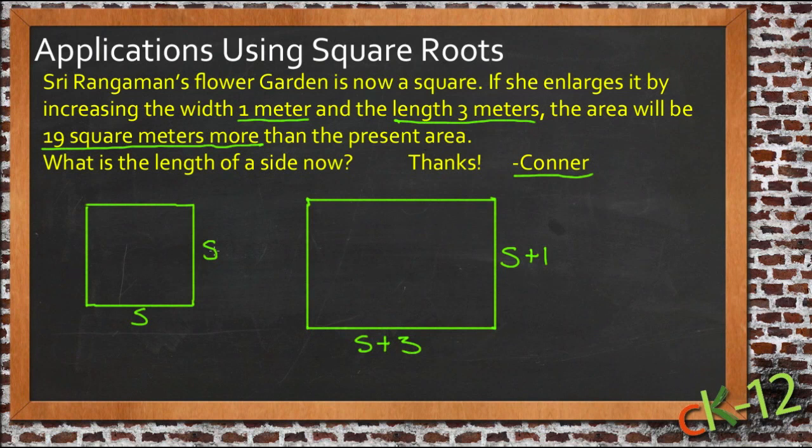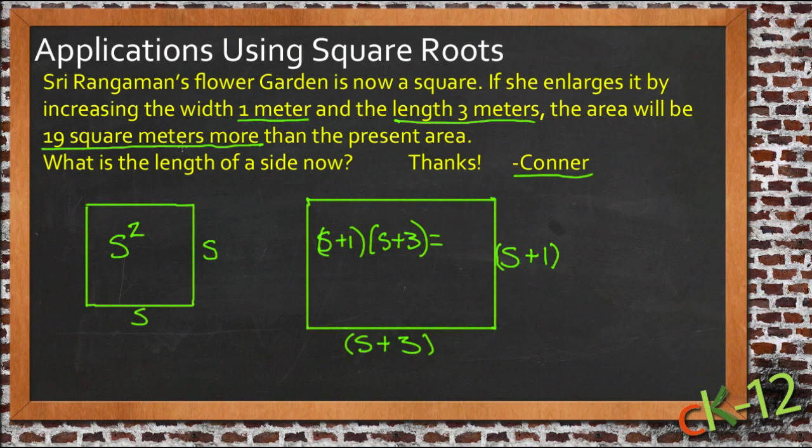And the left-right dimension, which was also S before, would now be S plus three. So this would be our new shape. Our original shape we had some area, we don't know what it was, but that area to calculate it would have been S squared. So in order to calculate the area of the new one, we'd have to take S plus one times S plus three. So the area for this one would be S plus one times S plus three, and we know that's going to be equal to the old area plus 19 square meters. So it's equal to S squared plus 19.